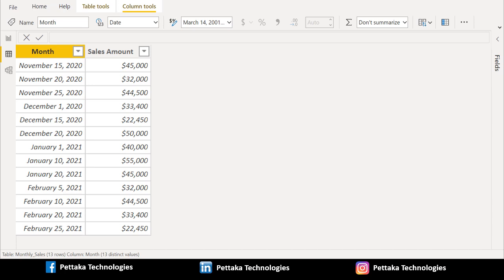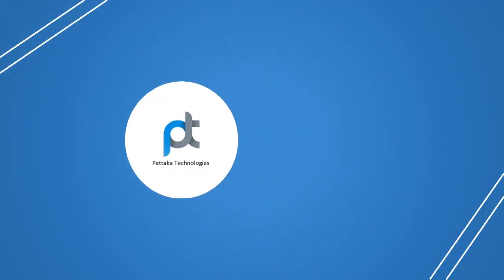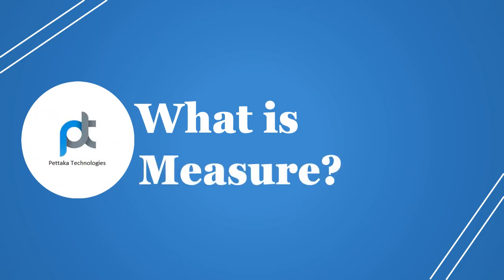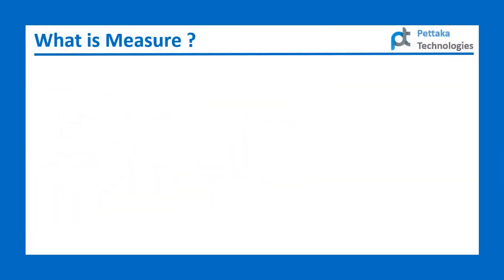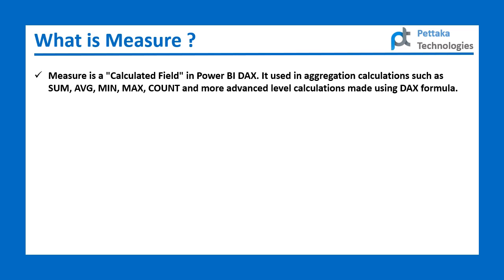We are going to calculate running total for the source data by applying a DAX function in a Power BI measure. What is a measure? A measure is a calculated field in Power BI DAX. It is used in aggregation calculations such as sum, average, minimum, maximum, count, and more advanced level calculations made using DAX formula.